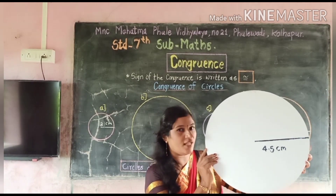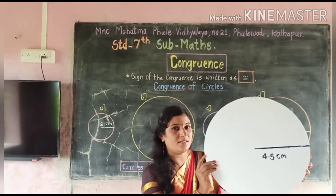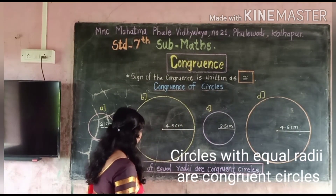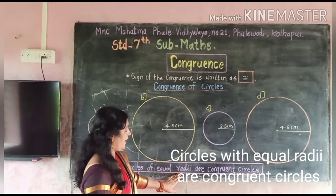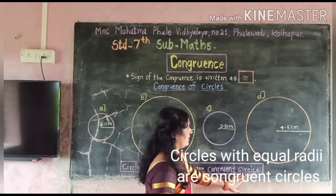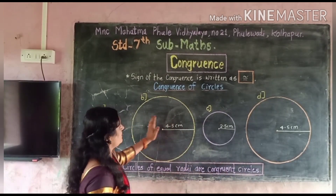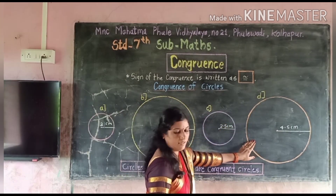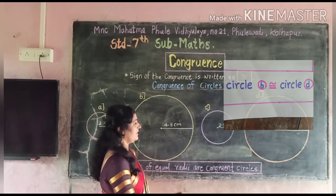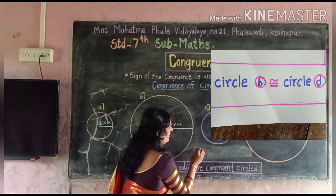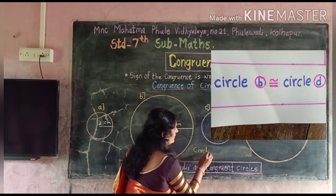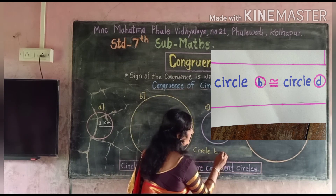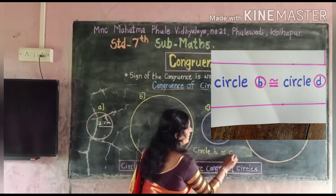That means these two circles are congruent circles. So we say that circles of equal radius are congruent circles. In these figures, Circle B is congruent to Circle D, written as Circle B ≅ Circle D.